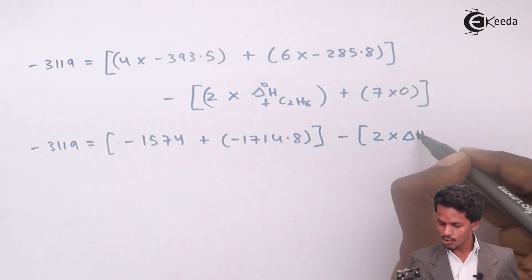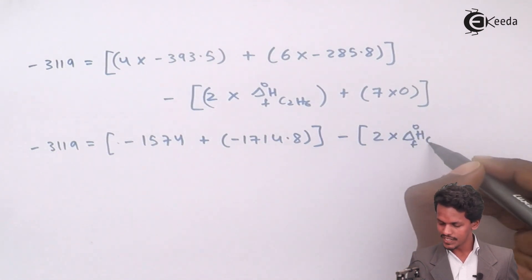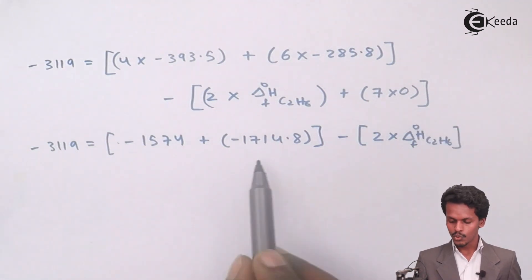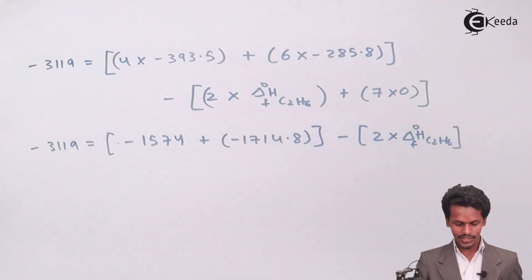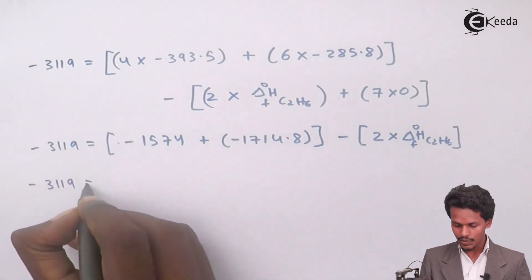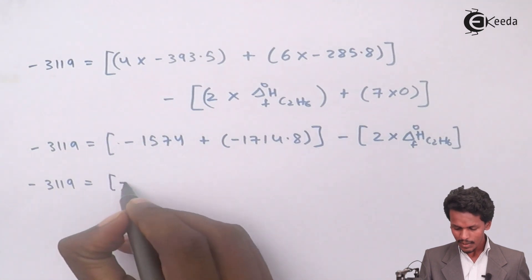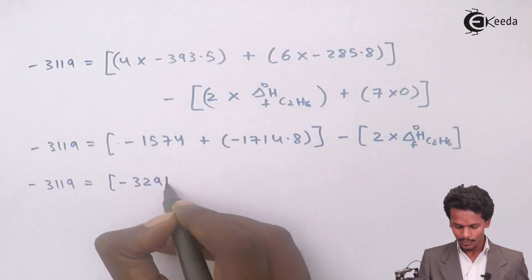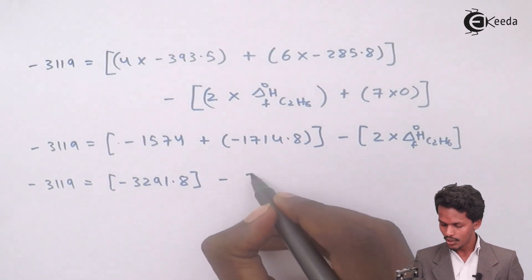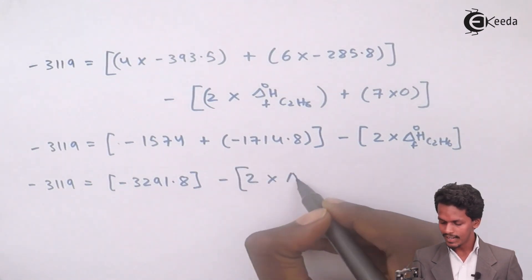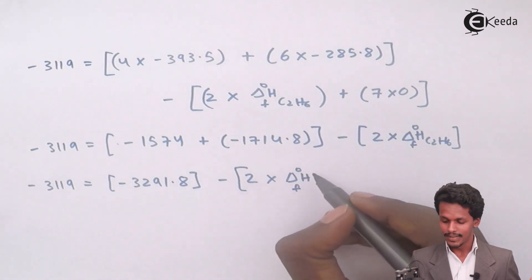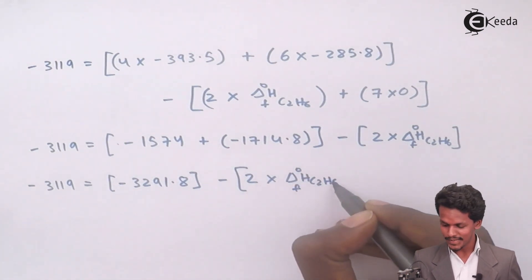So we have: minus 319 = minus 1574 + (minus 1714.8) minus 2 × ΔHf°(C2H6). Summing the product terms: minus 1574 plus minus 1714.8 equals minus 3291.8. So: minus 319 = minus 3291.8 minus 2 × ΔHf°(C2H6).